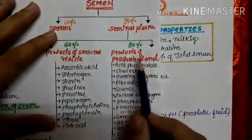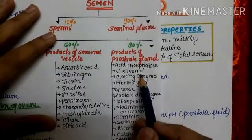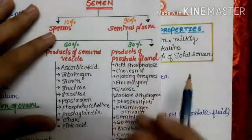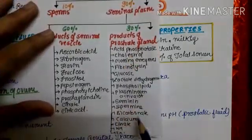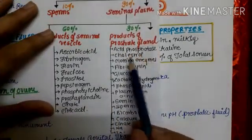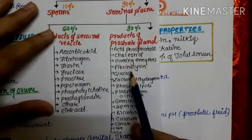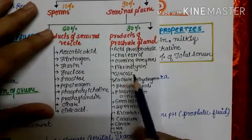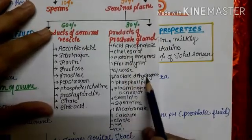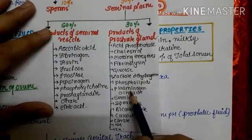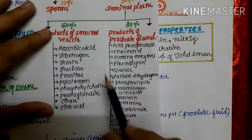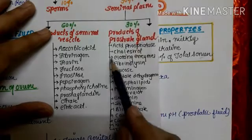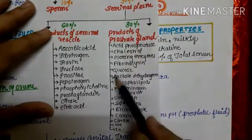The composition of prostatic fluid refers to the products present in the prostate gland. The prostatic fluid is formed by 10 components: acid phosphatase, cholesterol, clotting enzyme, fibrinolysin, glucose, lactate dehydrogenase, phospholipids, plasminogen activator, seminin, spermine, bicarbonate, calcium, citrate, sodium, and zinc.